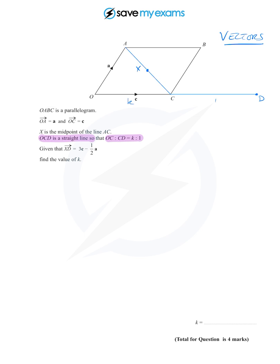And then it says given that XD—where's XD? Let's do that in red so it stands out. X to D, let's draw a nice straight line from X to D.